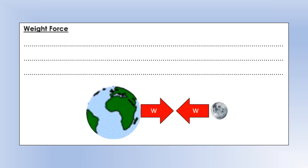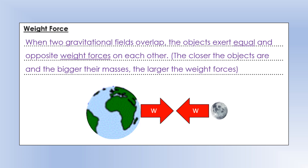The interaction of two gravitational fields leads to weight forces - forces plural. When two fields overlap, like the field for the Earth and the field for the Moon, those two objects will exert equal and opposite weight forces on each other. The Moon exerts a weight force on the Earth and the Earth exerts a weight force on the Moon. The closer the objects are and the bigger their masses, the larger the weight forces.